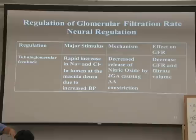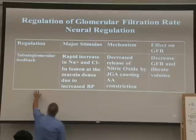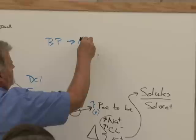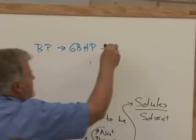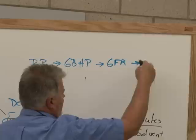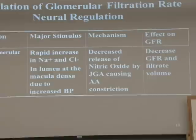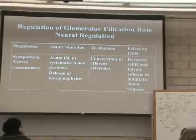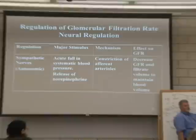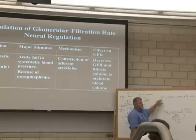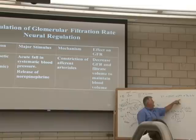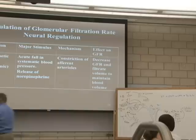What these macula densa cells do is release a gas called nitric oxide, which is a vasoactive agent that affects smooth muscle. In this instance, nitric oxide causes constriction of the afferent arteriole. If we constrict the afferent arteriole, GBHP goes down, and if GBHP goes down, glomerular filtration rate drops, and if GFR drops, the amount of filtrate going over the macula densa drops. So it's similar to the myogenic mechanism, only the agent creating it is different. The goal is to decrease GFR. You can always track: BP relates to GBHP, relates to GFR, relates to the amount of filtrate produced — all directly related.